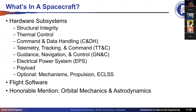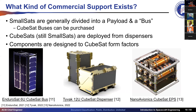Inside spacecraft you have several subsystems — some optional, some always present: structural integrity, thermal control, command and data handling, TT&C for communicating with Earth, GN&C for attitude control and determining position and velocity, electrical power system for generating and distributing power, payload, mechanisms like adjustable mass translators for center-of-gravity control, propulsion for orbit changes, ECLSS for environmental control, flight software, and orbital mechanics and astrodynamics analysis.